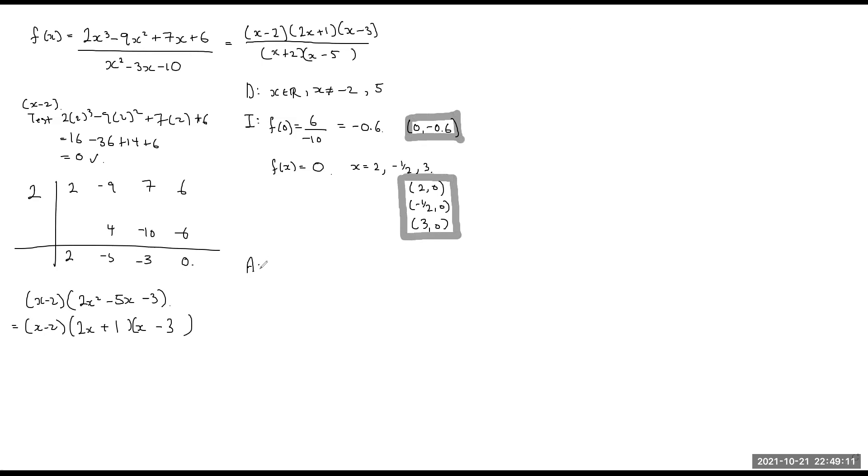All right, so asymptotes are next. Vertical asymptote, as I mentioned before, x is going to be a negative 2 as well as a 5. In this case, there are no horizontal asymptotes. We're going to go straight into oblique asymptote. How do we do that?